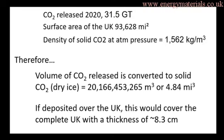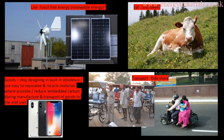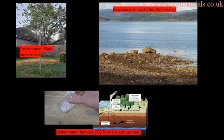So what can we do to reduce the amount of CO2 we're emitting to the atmosphere? Here are a couple of ideas: maybe we use more fossil-free or renewable energy; maybe we eat less meat; maybe we stop buying goods with built-in obsolescence or high amounts of embedded carbon in their manufacture. Transportation is also another big emitter of carbon dioxide, so maybe we should look at ride-sharing. As for the environment, maybe we should plant more trees, or respect and look after the oceans.